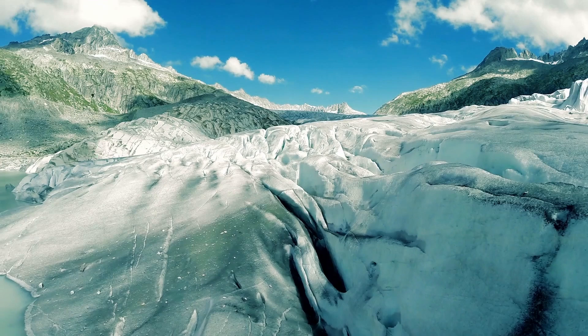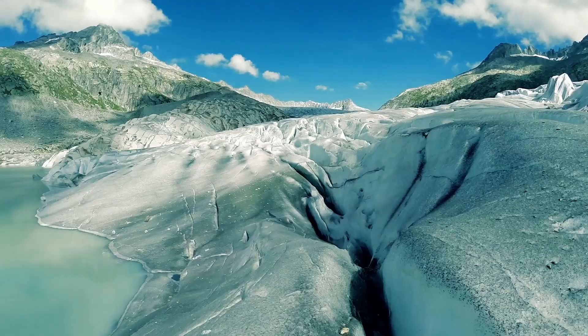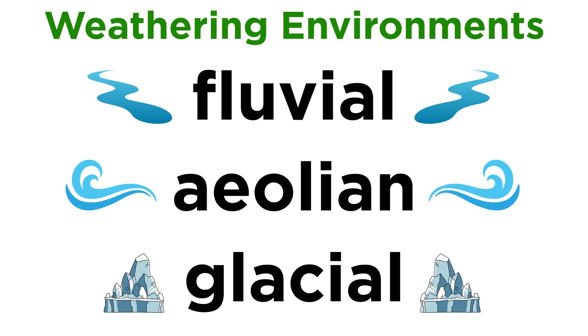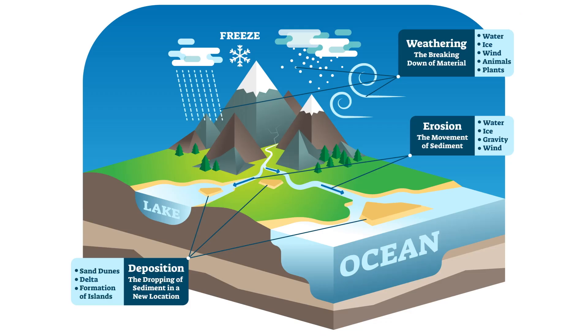We just learned about some different types of physical and chemical weathering processes. But we should also understand that weathering occurs in a wide variety of environments, producing unique characteristics in the sedimentary rocks that eventually form there. On land, the most significant weathering environments are fluvial, aeolian, and glacial.